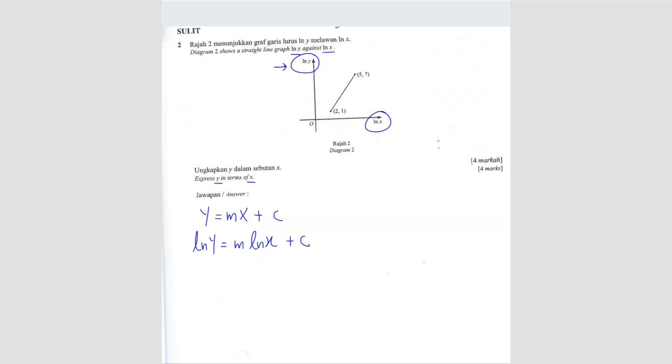Before we can solve the m and c, we can first solve m. M is quite straightforward because you already have the two coordinates here. So you can use the gradient formula. M equals y2 minus y1 over x2 minus x1. We can take 7 minus 1 over 5 minus 2, which gives 6 over 3. The answer is 2.